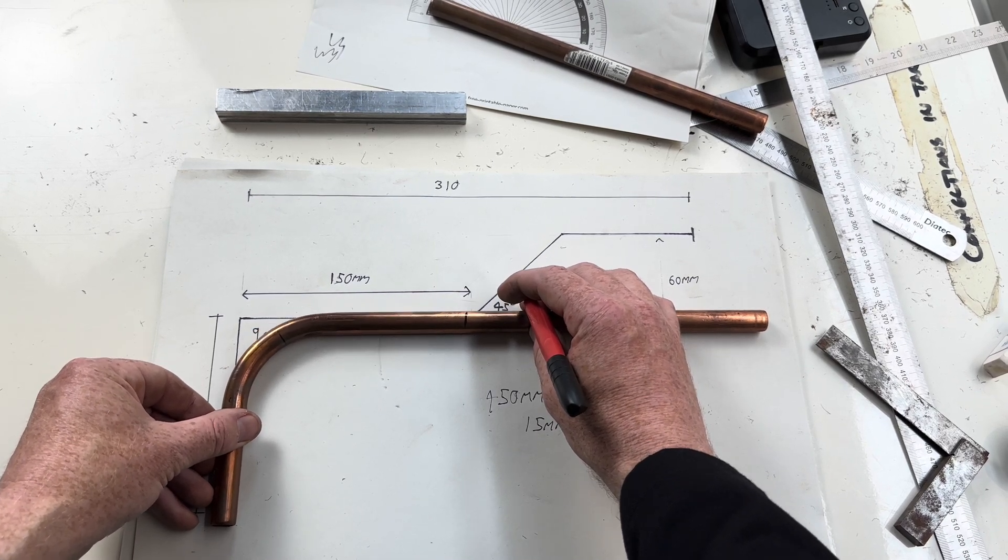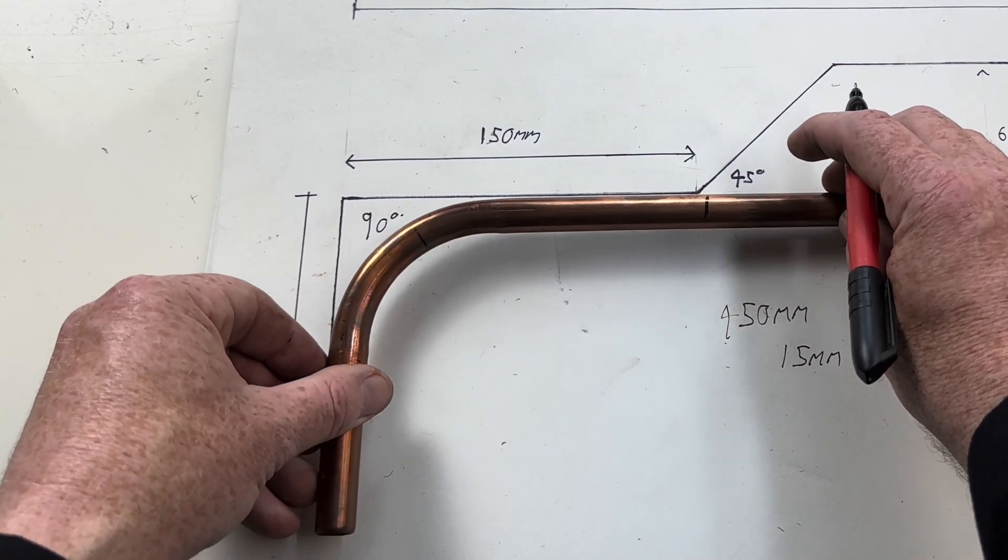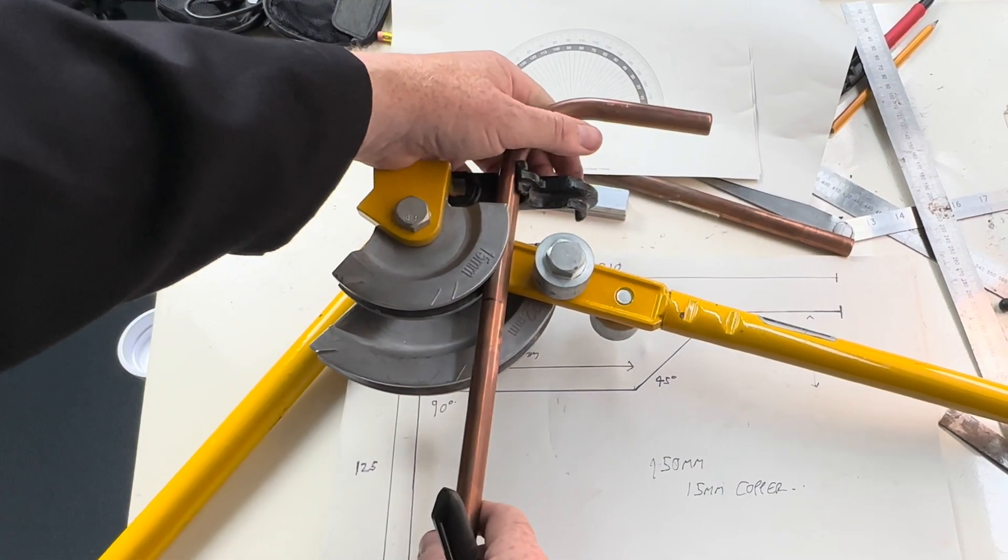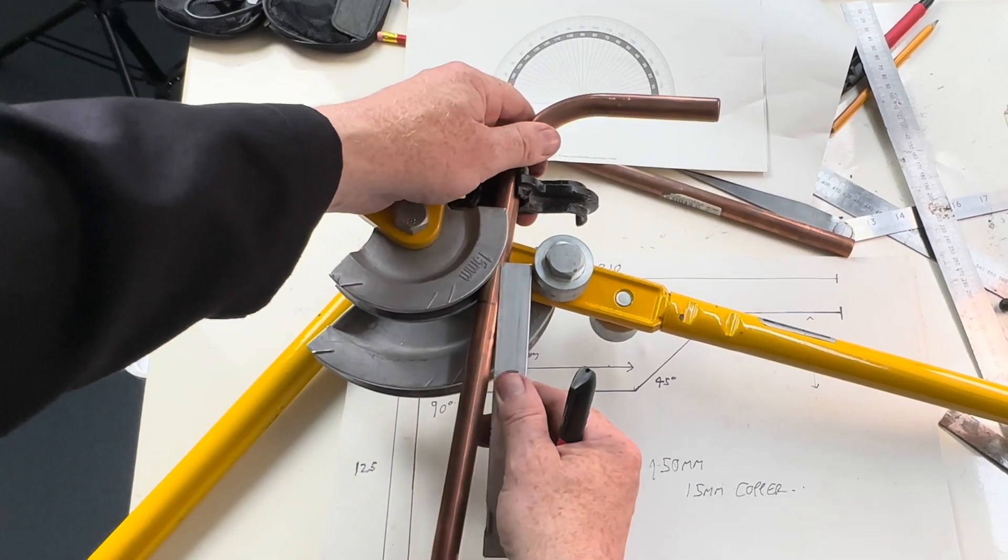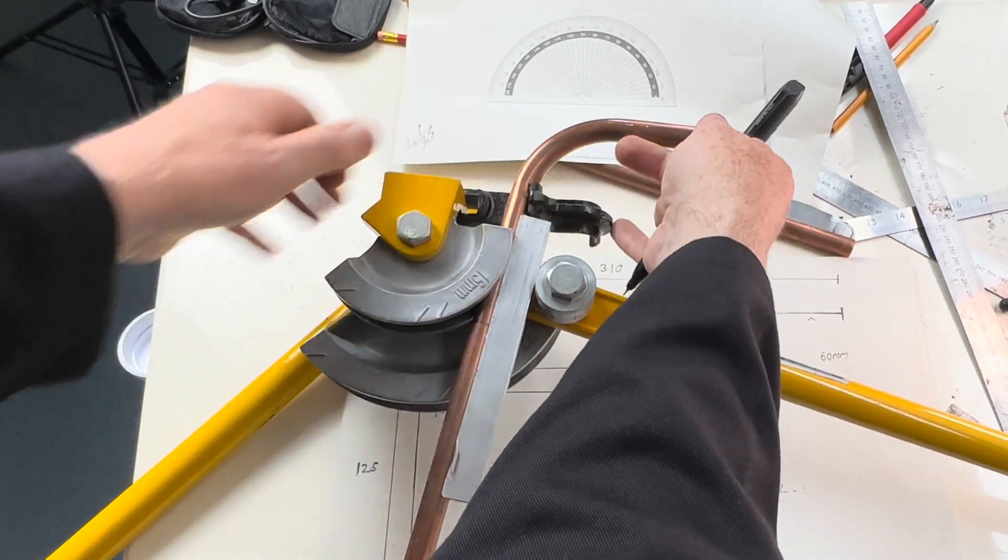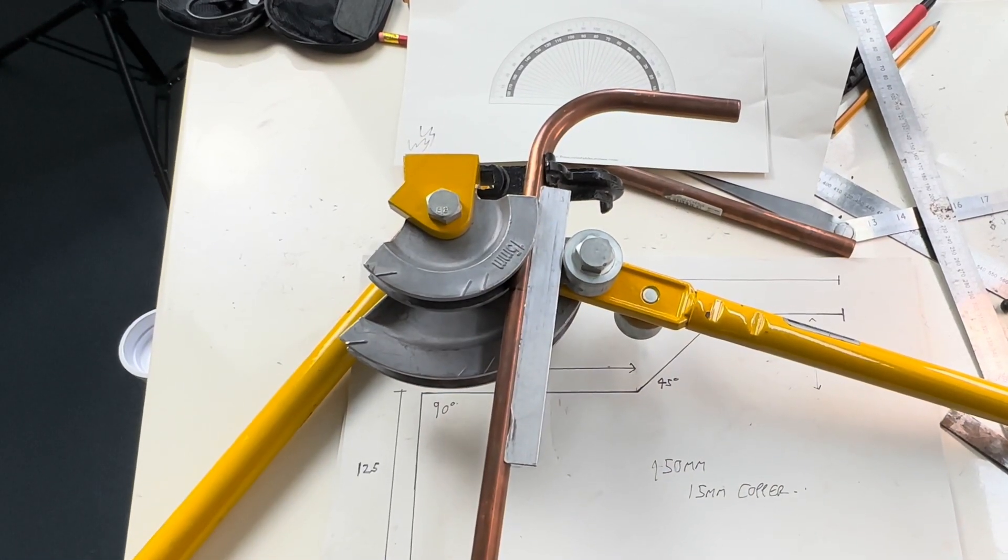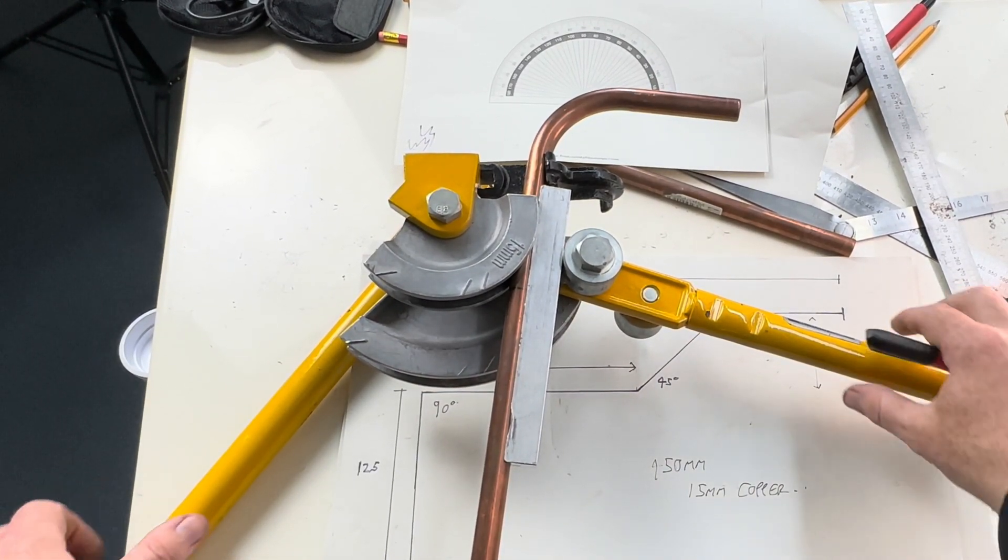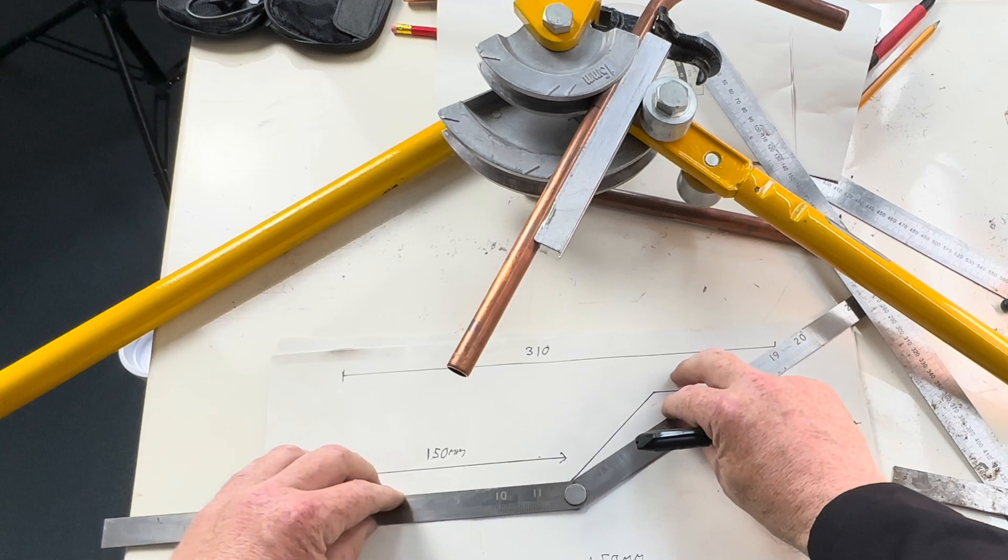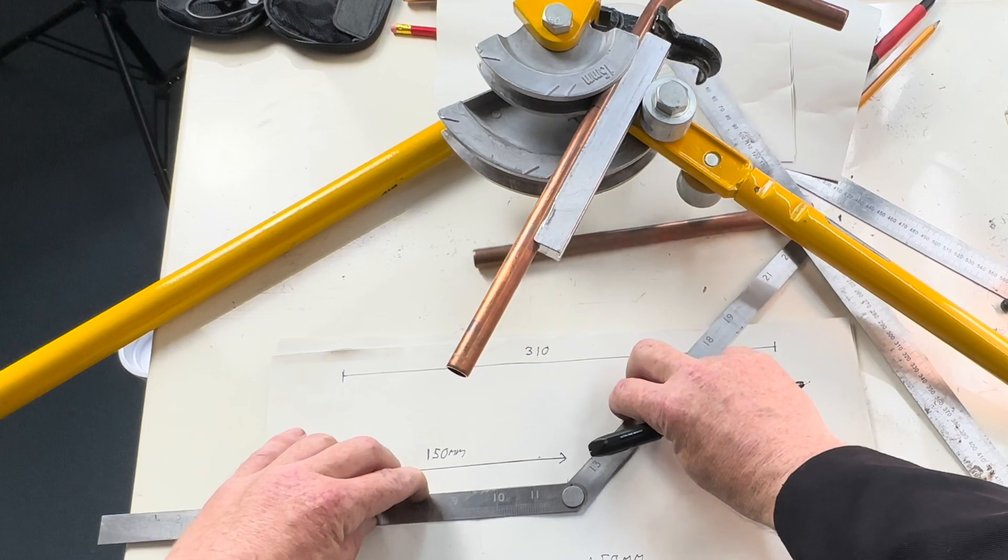Like so. We now put the pipe back into the pipe bender so it looks like this. Using the folding ruler we set the angle to 45 degrees.